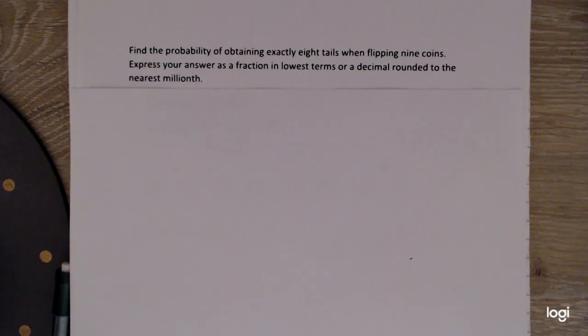In this video, I'm going to demonstrate the classical definition of probability. Find the probability of obtaining exactly 8 tails when flipping 9 coins. And we can express the answer as a fraction in lowest terms or as a decimal rounded to the nearest millionth.